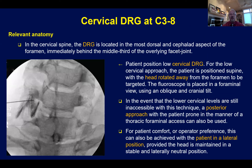For lower levels, the situation is somewhat easier because the anatomical views are easier to reconcile. In the cervical spine, the DRG is in the most dorsal and cephalad aspect of the neuroforamen — it's behind the middle third of the overlying facet joint. The patient is again positioned supine with the head turned to the contralateral side from the target. Some would use a posterior or lateral approach.